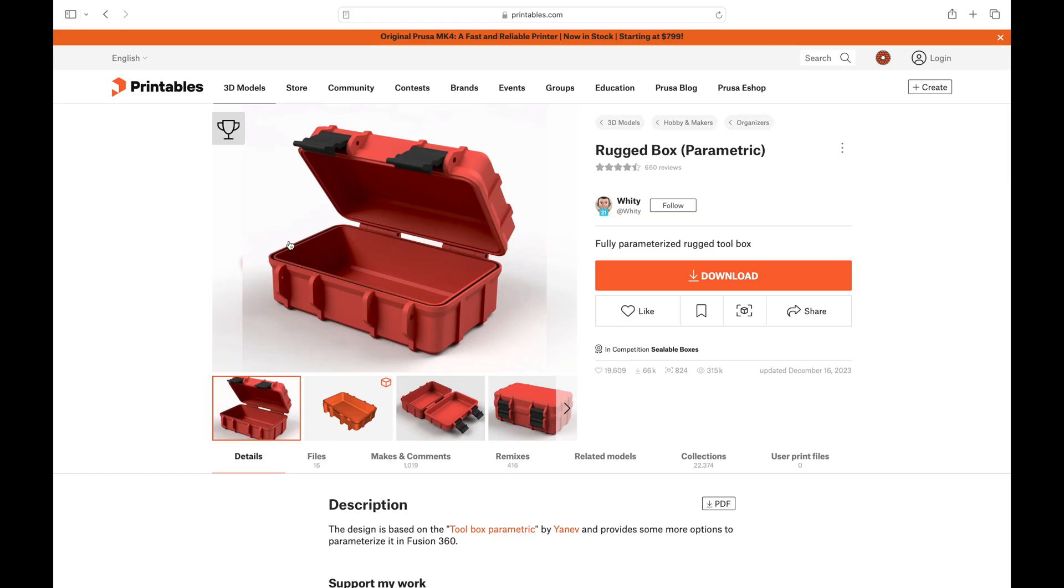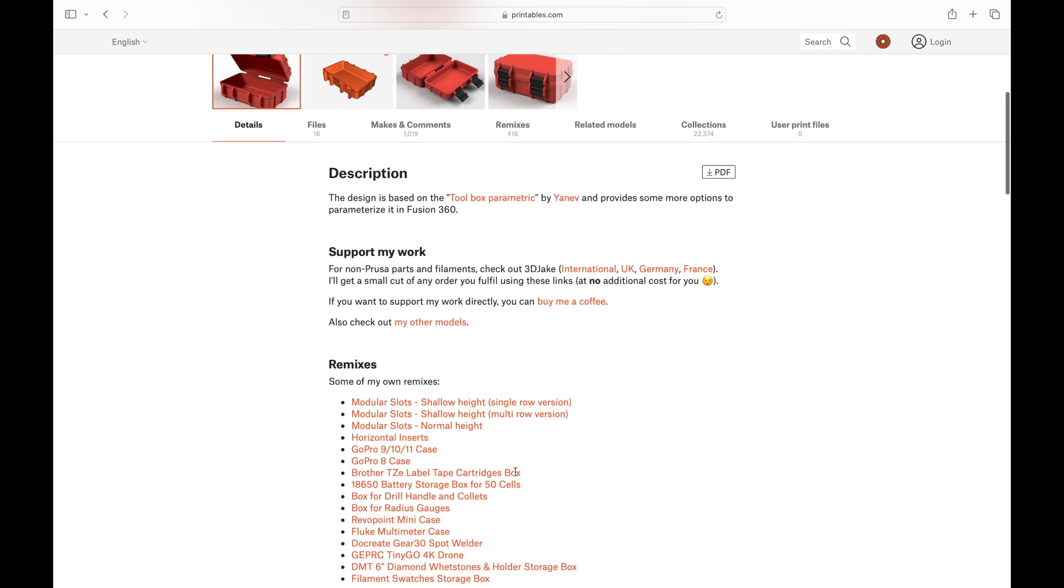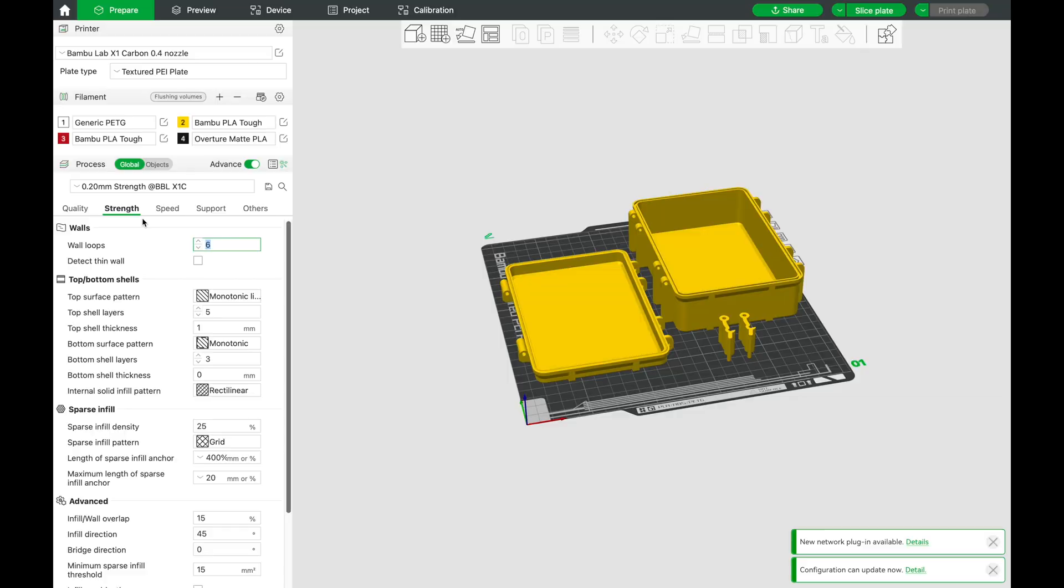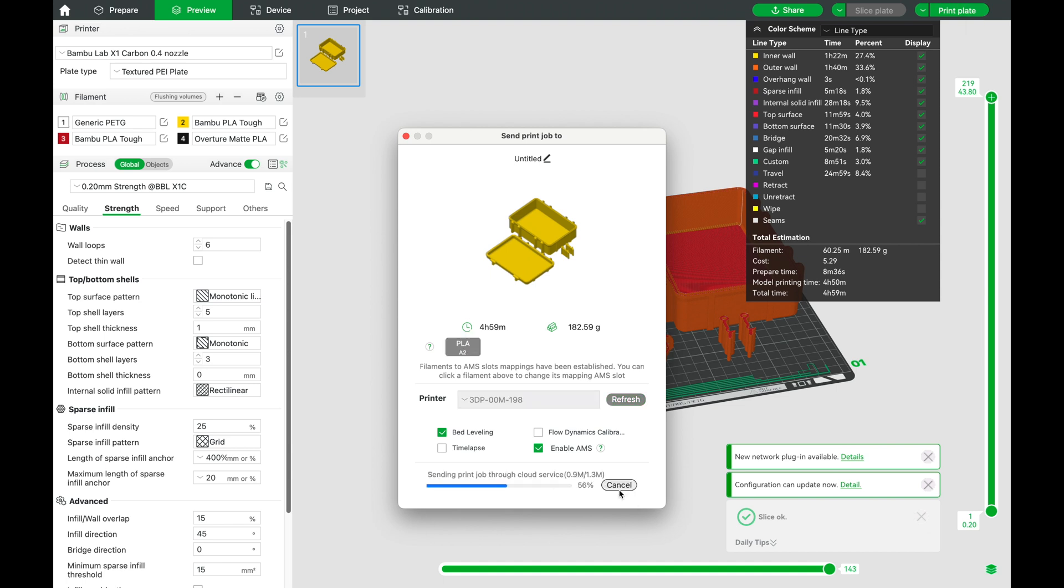When it came time to choosing the next case we were going to test, we knew that no list would be complete without the WIDI. This award-winning design has been remixed over 416 times, so you're bound to find one that works for you. If you'd still like to customize your own, there are Fusion 360 files available to download. We'll be going with the same settings as before for the wall loops and infill density. All the files imported into the slicer really well, and it looks like this whole print will fit on one plate, so let's see how it goes.